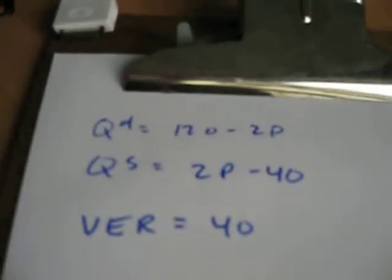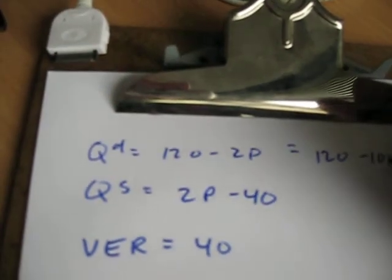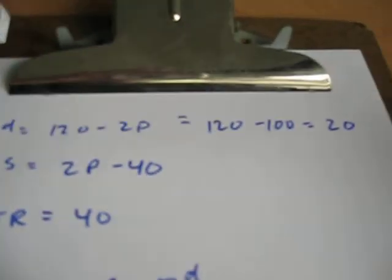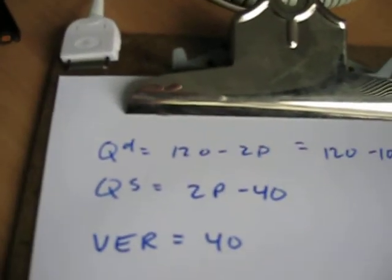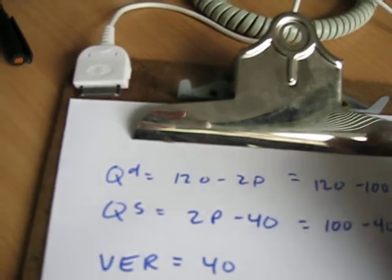Now that we have the price, take it back up, plug it into our demand and supply. 120 minus 2 times 50, well, that's 100. So, that means we're going to consume 20 ourselves. Put the 50 into the supply equation. 2 times 50 is still 100 minus 40. So, that means we're going to make 60 of them.